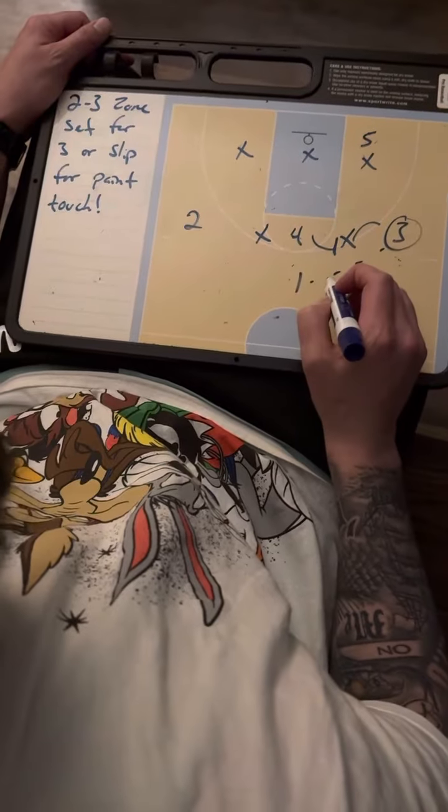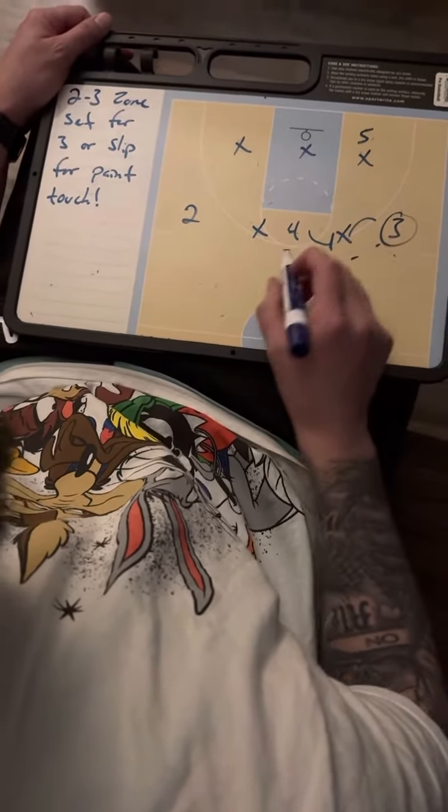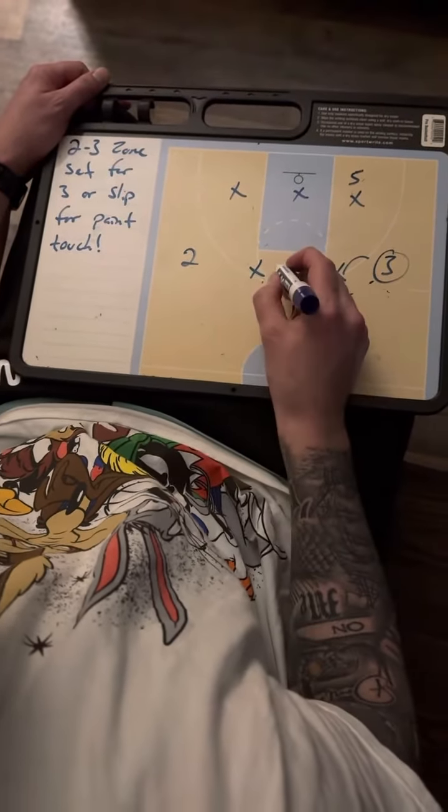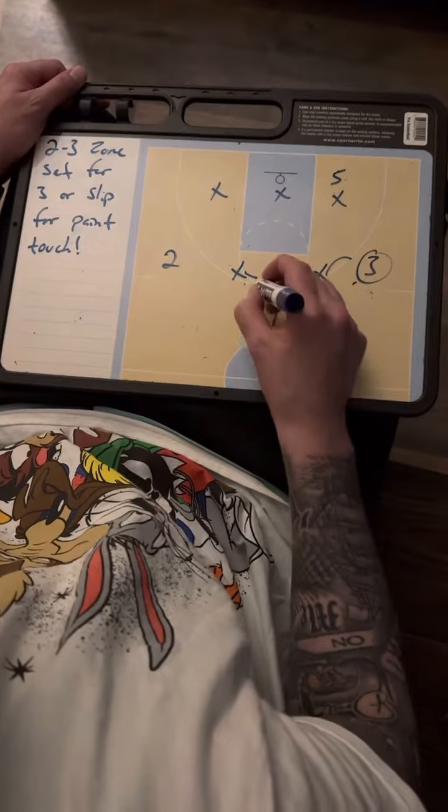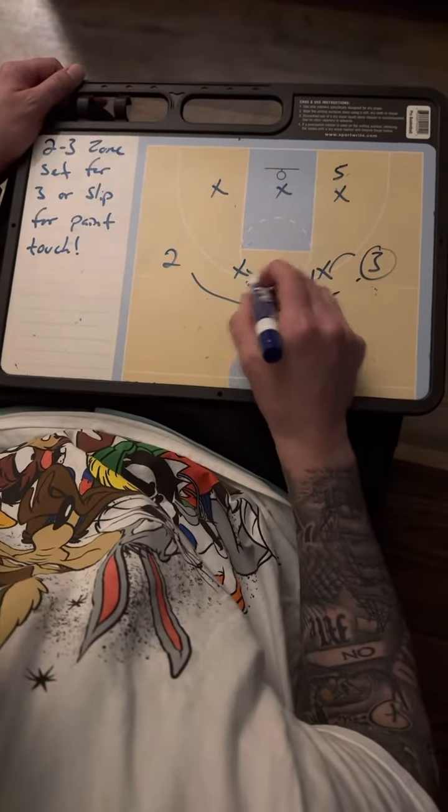Our 4-man is going to set a ball screen right there. And then our 1, as soon as I make that pass, I'm going to screen the opposite of the zone. That opposite of the zone should rotate a little bit, so they're probably going to be kind of right there. So we're going to set our screen, and our 2 is going to fill anywhere between the lane lines.